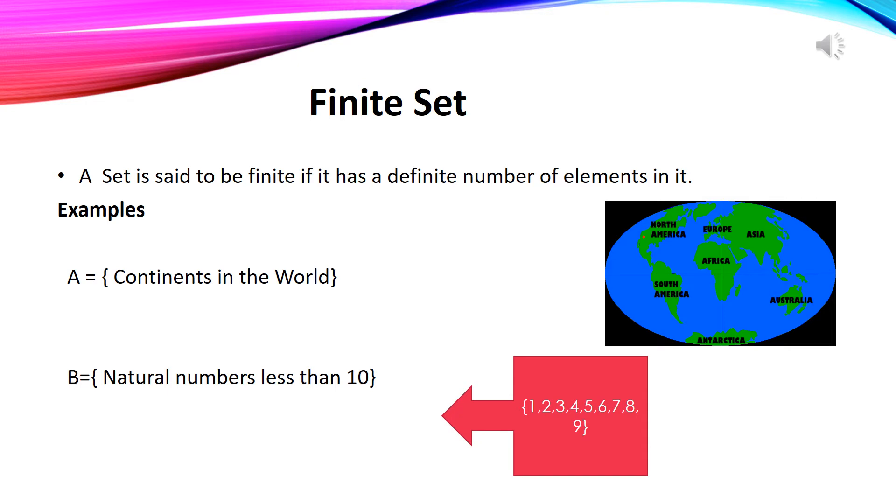A set having a limited number of elements is called a finite set, that is, its elements can be counted. Consider the following examples of sets. In the first example, we have a set of continents in the world. Can we count how many continents in the world we have? Yes, it's seven. We have seven continents in the world.